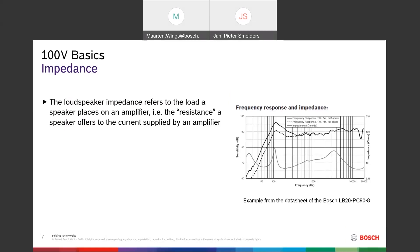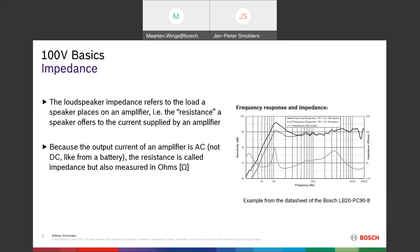Regarding 100-volt basics: the impedance of a loudspeaker is actually the resistance that a loudspeaker has to the current that an amplifier can deliver to it. The higher the impedance, the higher the resistance. The output of an amplifier is an alternating signal — not direct like from a battery — which is why we call it impedance rather than resistance. It is still measured in ohms, just like resistance.